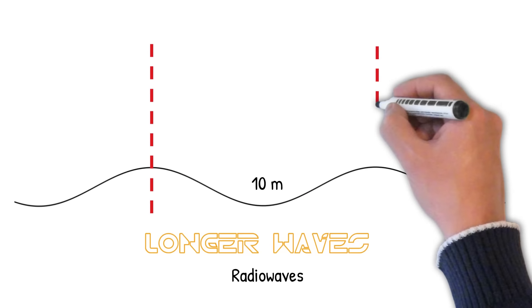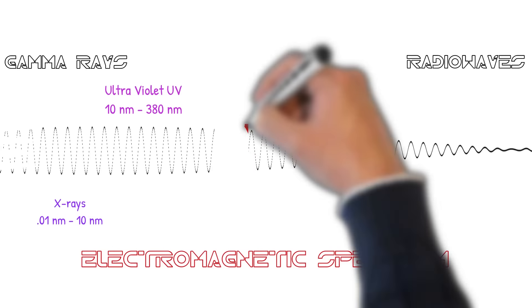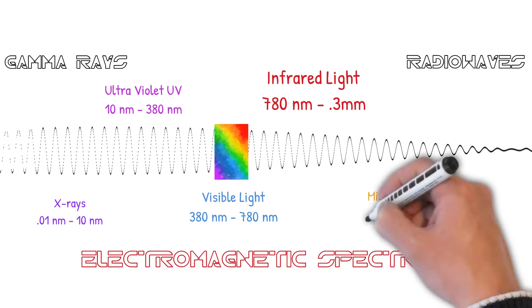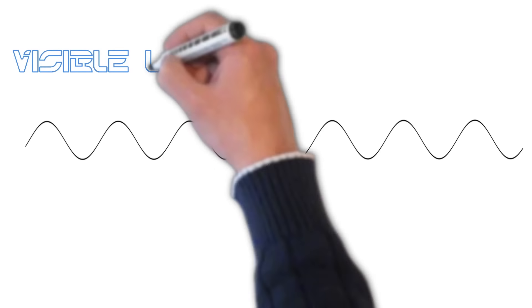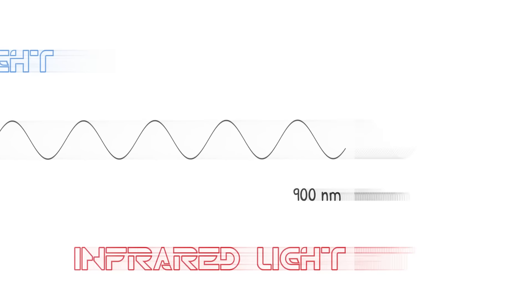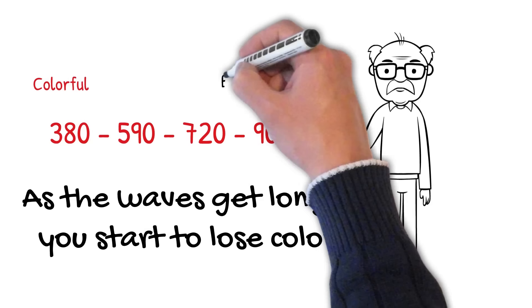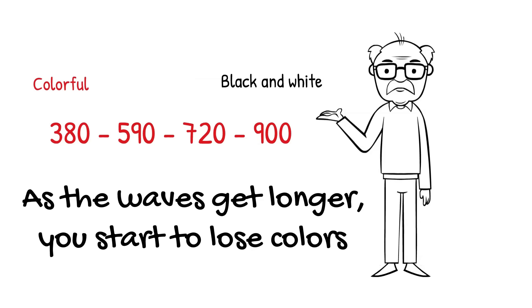On the other end you have radio waves, which are much longer. Between these two extremes, between gamma rays and radio waves, you also have things like x-rays, ultraviolet, visible light, and infrared light — which is what we're interested in — as well as microwaves. We're only going to focus on visible light and infrared light. Visible light is 380 nanometers, and infrared light can go up to 900 nanometers. As the waves get longer, you start to lose color.